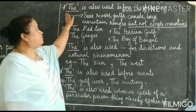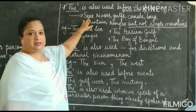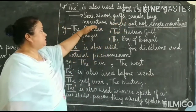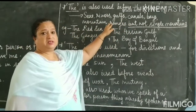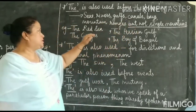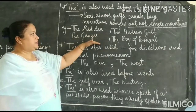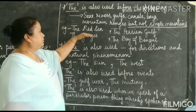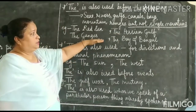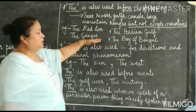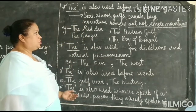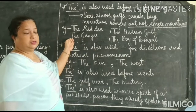'The' is also used before the names of seas, rivers, gulfs, canals, bays, and mountain ranges — but not before the names of single mountains. For example: the Red Sea, the Persian Gulf, the Ganges, the Bay of Bengal. These are examples of seas, rivers, gulfs, and oceans, and what is used in front of all of them? The article 'the'.